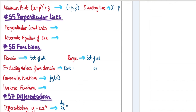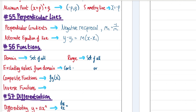Perpendicular lines have gradients that are negative reciprocals of one another. To find gradient 2, do −1 ÷ gradient 1. For grade 9 or A-level preparation, learn the point-slope form: y − y₁ = m(x − x₁). It's more efficient than y = mx + c.